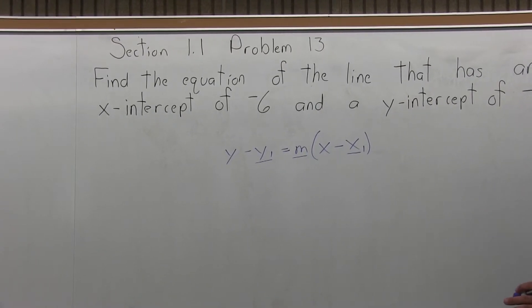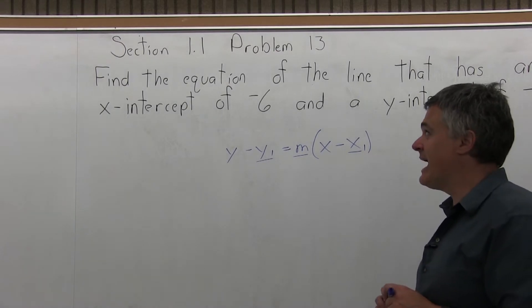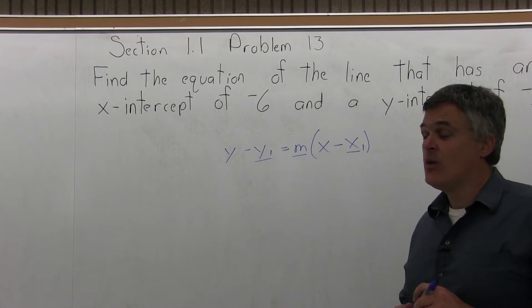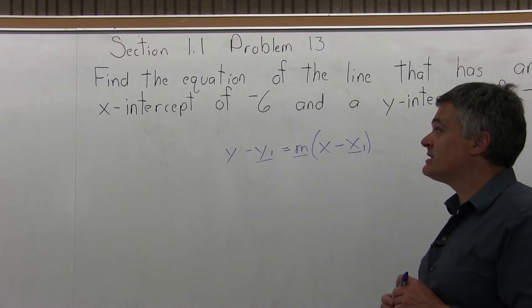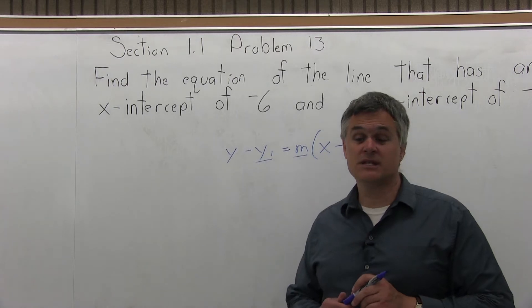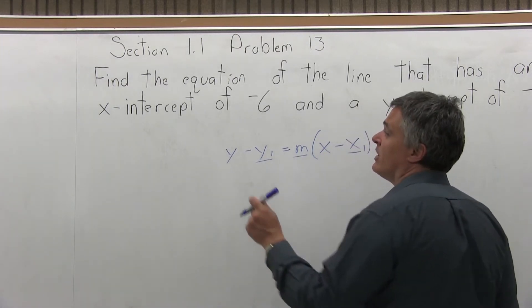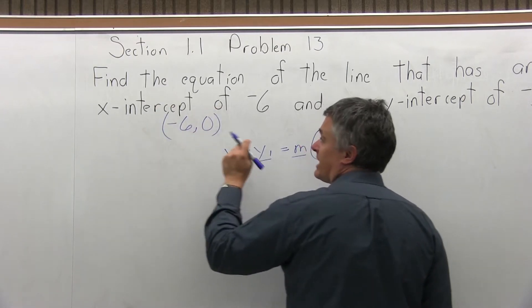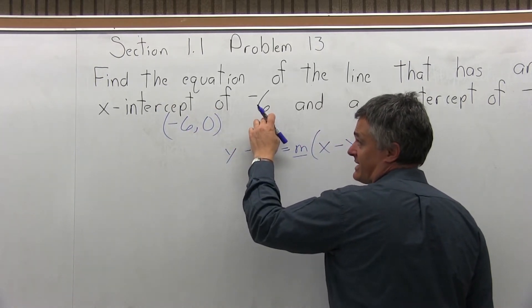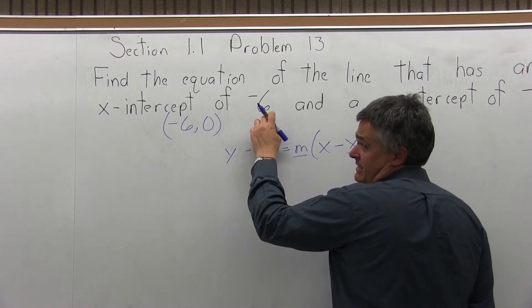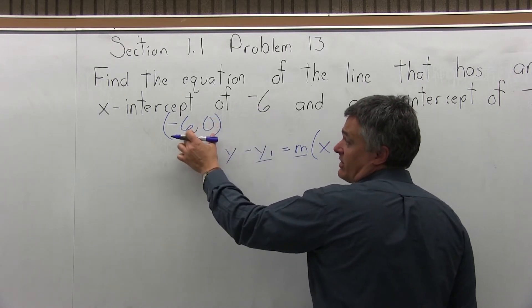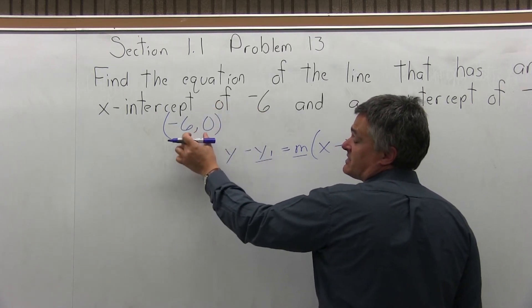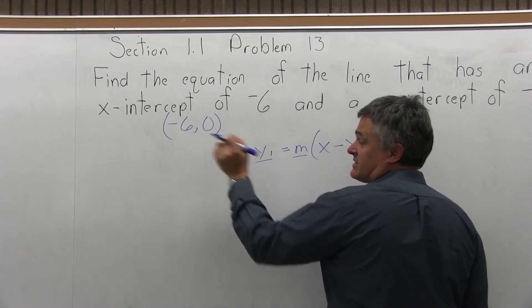Now this question doesn't seem to fit the same format — the x-intercept of negative 6, where would that go? What you have to realize is that the x-intercept of negative 6 is giving you a point with the coordinates negative 6, 0. The x-intercept of negative 6 means this line crosses the x-axis back 6, so it would cross at negative 6.